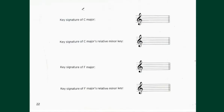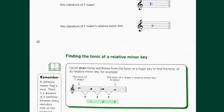Next, we have C major, which doesn't have any sharps or flats, and we need to write the key signature of the relative minor of C major. So the relative minor, which is A minor, will also not have any sharps or flats. Then we have F major — you know that we have a B flat in the F major key, so we write a B flat in both places.